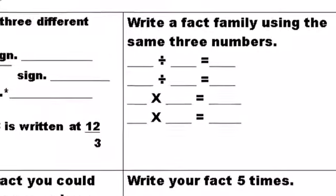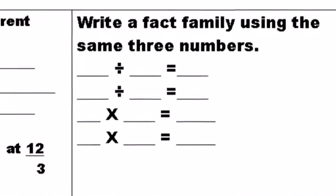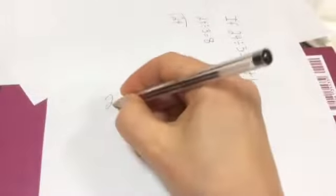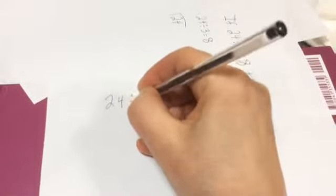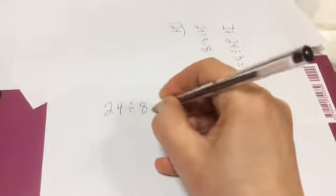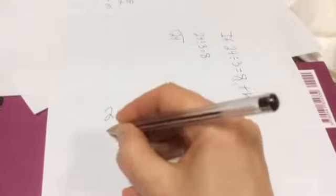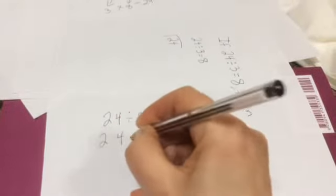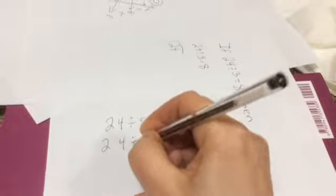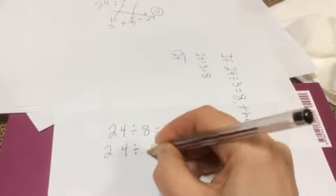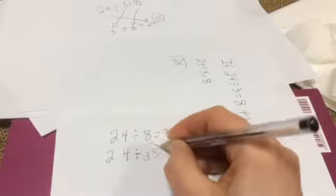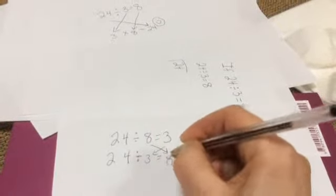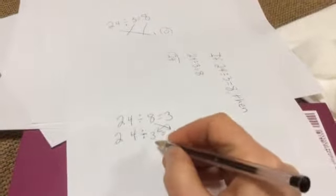We'll be doing more fractions later. Here's the next one. Write a fact family using the same three numbers. 24 divided by 8 equals 3. Now use the exact same numbers: 24, 8, and 3 to make another division. 24 divided by 3. Take the quotient and switch it with the divisor. And there you have it.